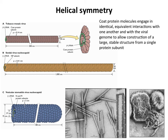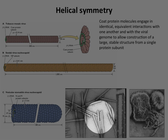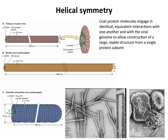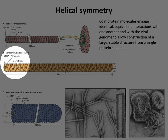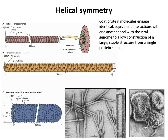In EM images, TMV particles are naked RNAs with protein twisted around them, and that's how they infect plants. There are also versions of this helical structure in animal viruses. Sendai virus, a paramyxovirus related to measles, also has a nucleocapsid made up of a single protein that interacts with itself and with the RNA — a bit longer than the TMV capsid. Both TMV and Sendai are called nucleocapsids because of the RNA–protein interaction.